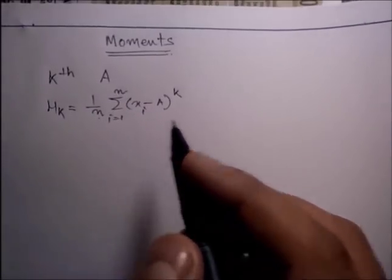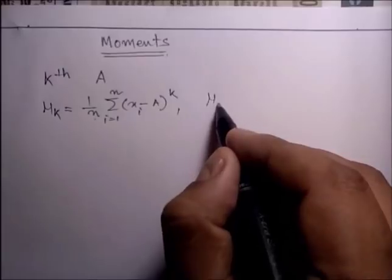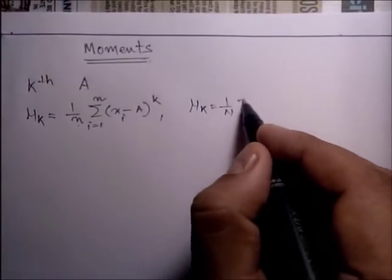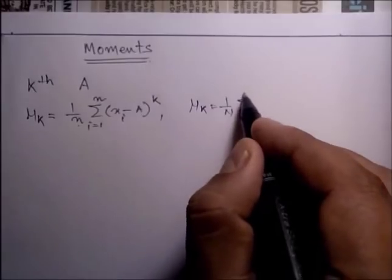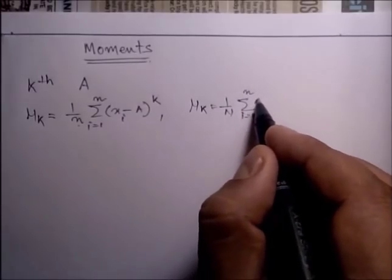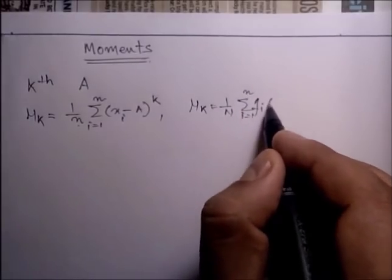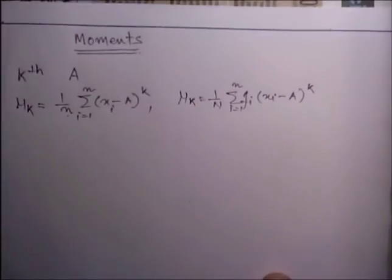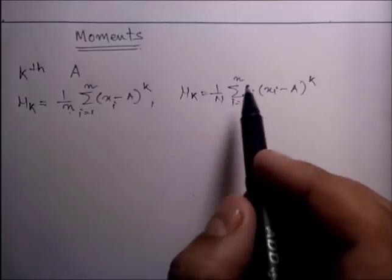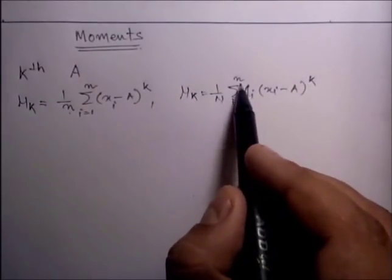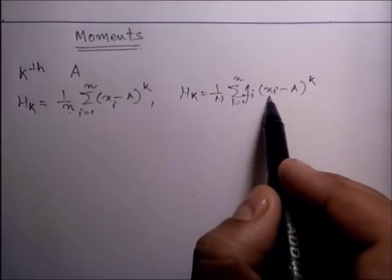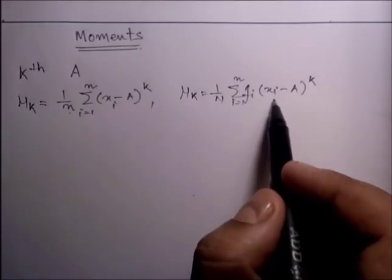For grouped data, the moment formula uses: n as the number of classes, f_i as the frequency of each class, and x_i as the midpoint of the classes.